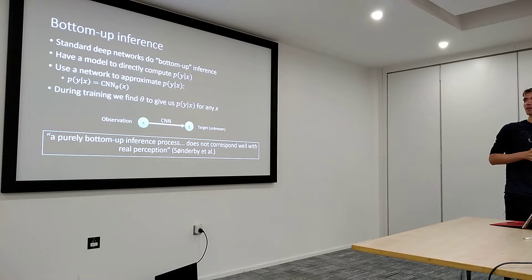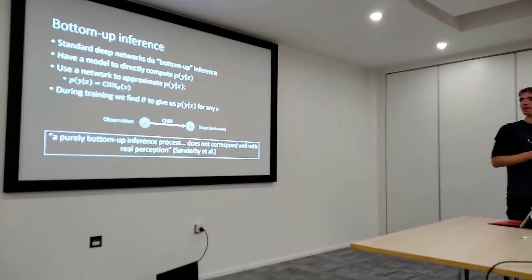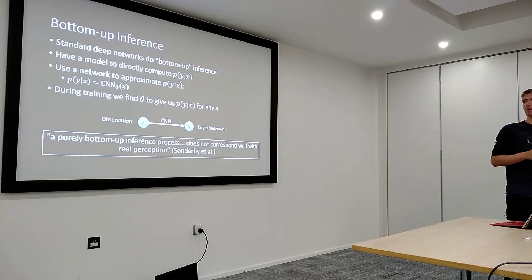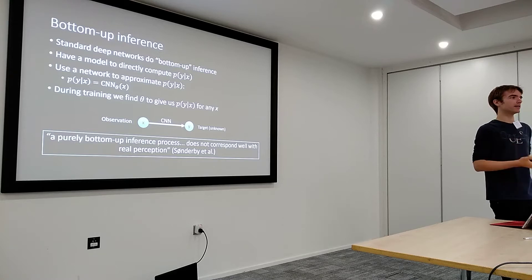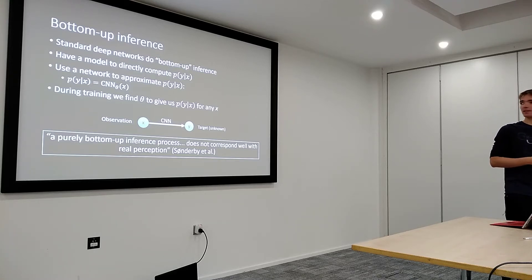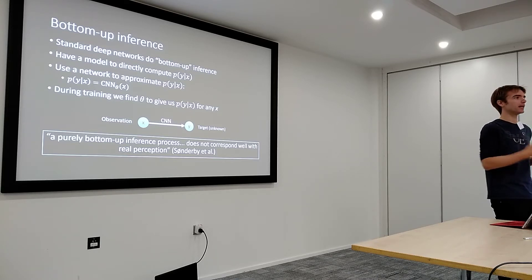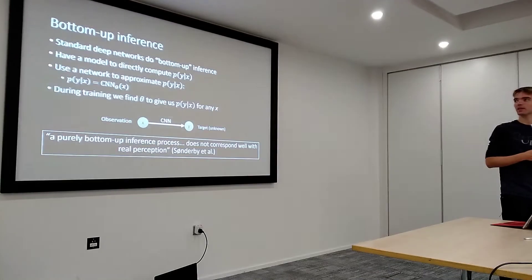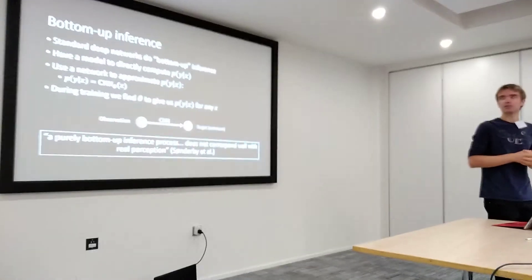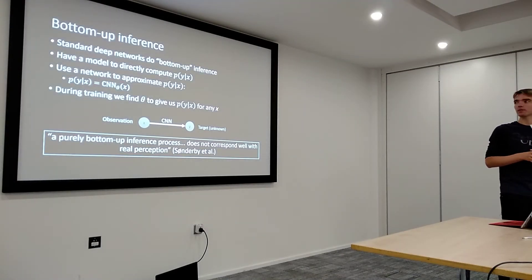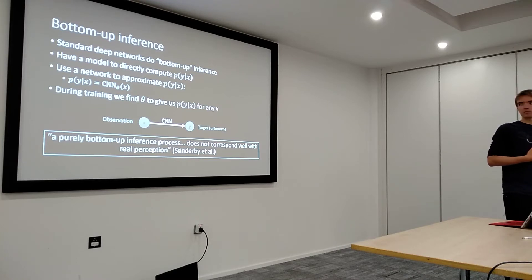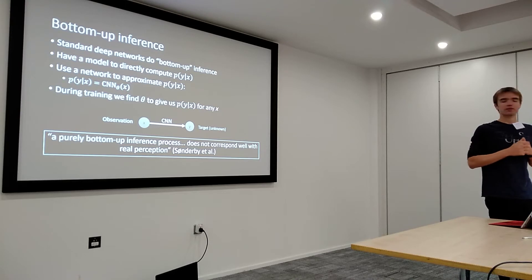So what is bottom-up inference? Standard networks actually do bottom-up inference quite naturally. Bottom-up inference is when we have a model to directly compute P(Y|X), where Y is our variable of interest — for example, in monocular depth prediction, Y would be our depth and X would be our RGB images. In the deep learning sense, we just use a network, such as a convolutional neural network, to compute P(Y|X), and during training we find the parameters theta of this network that directly give us this quantity. A purely bottom-up inference process is convenient, but it doesn't correspond well with real perception.